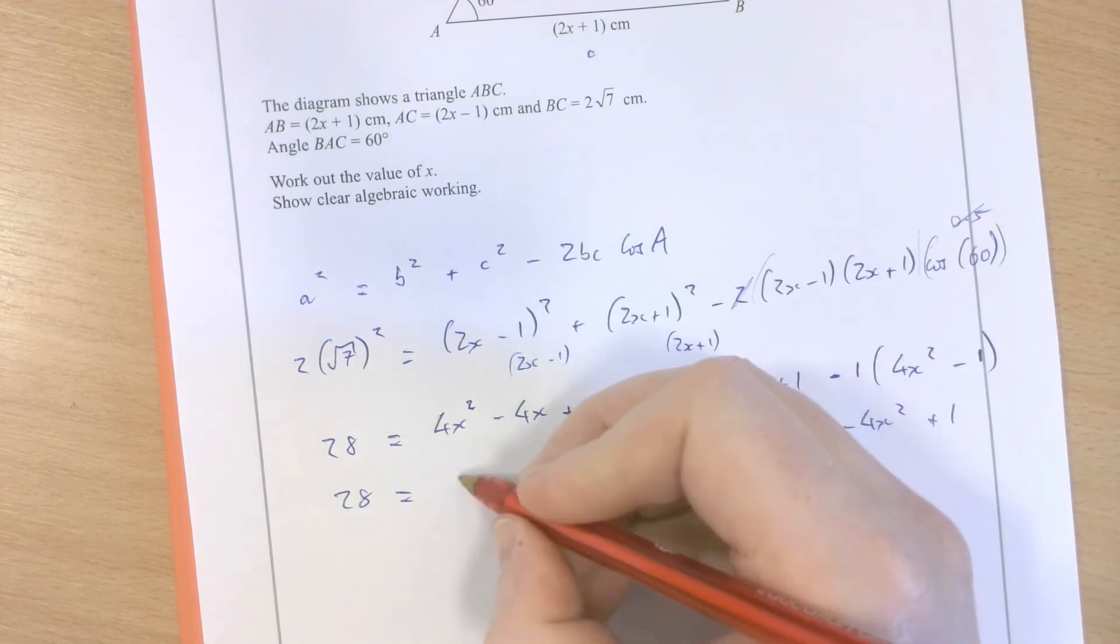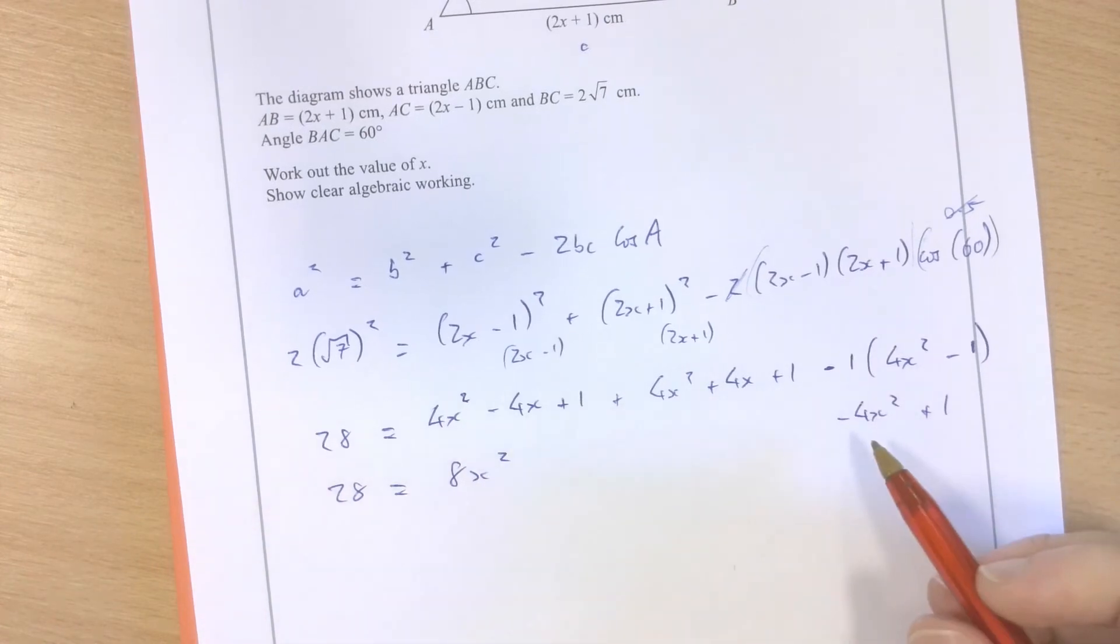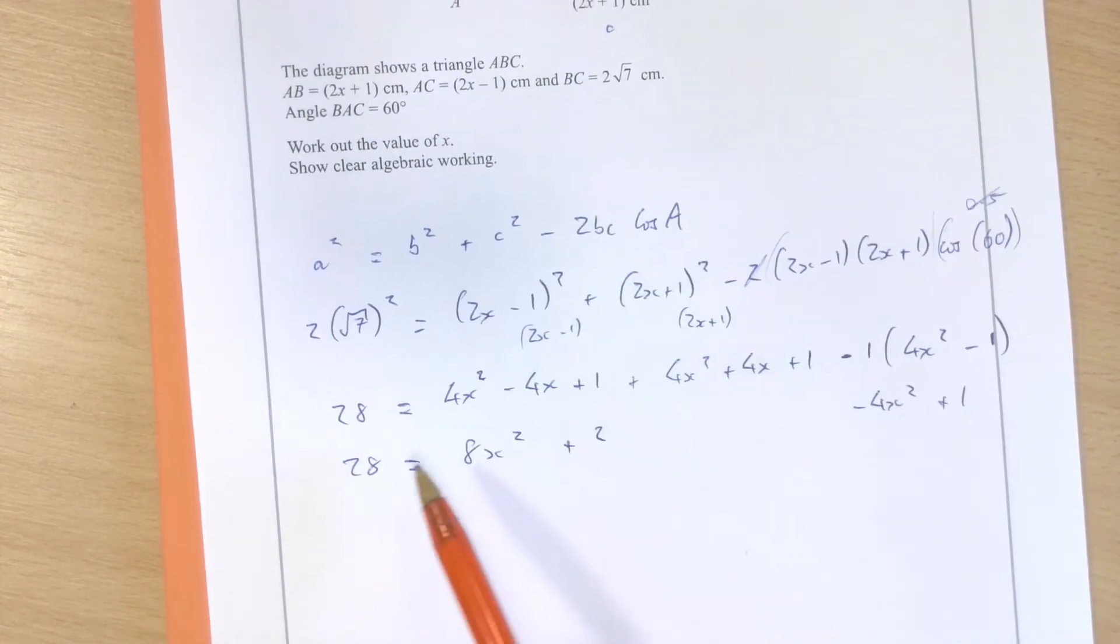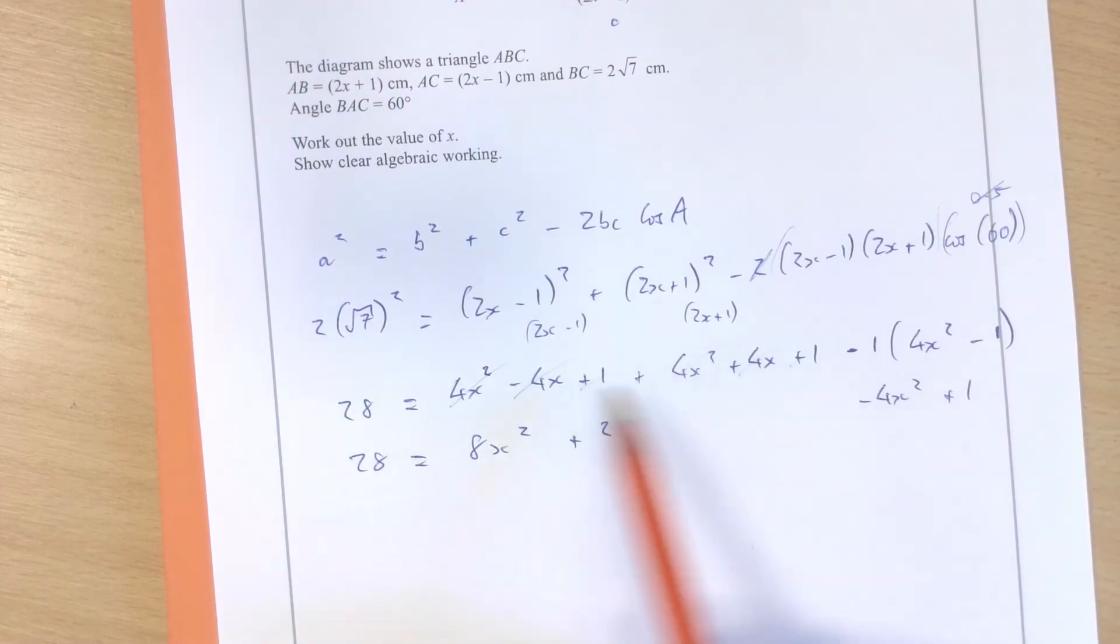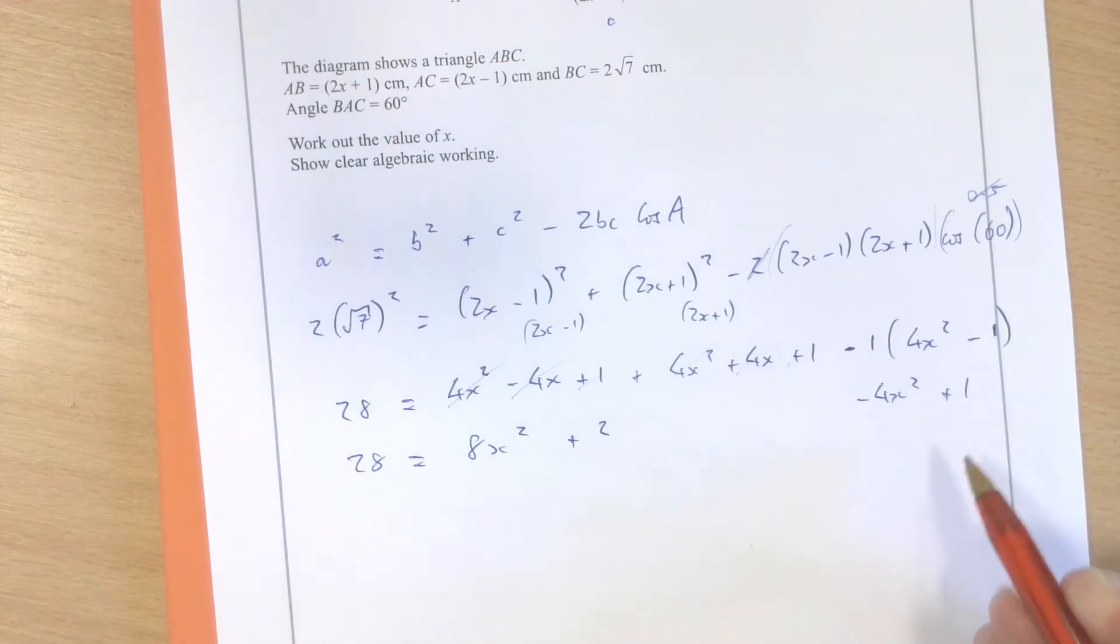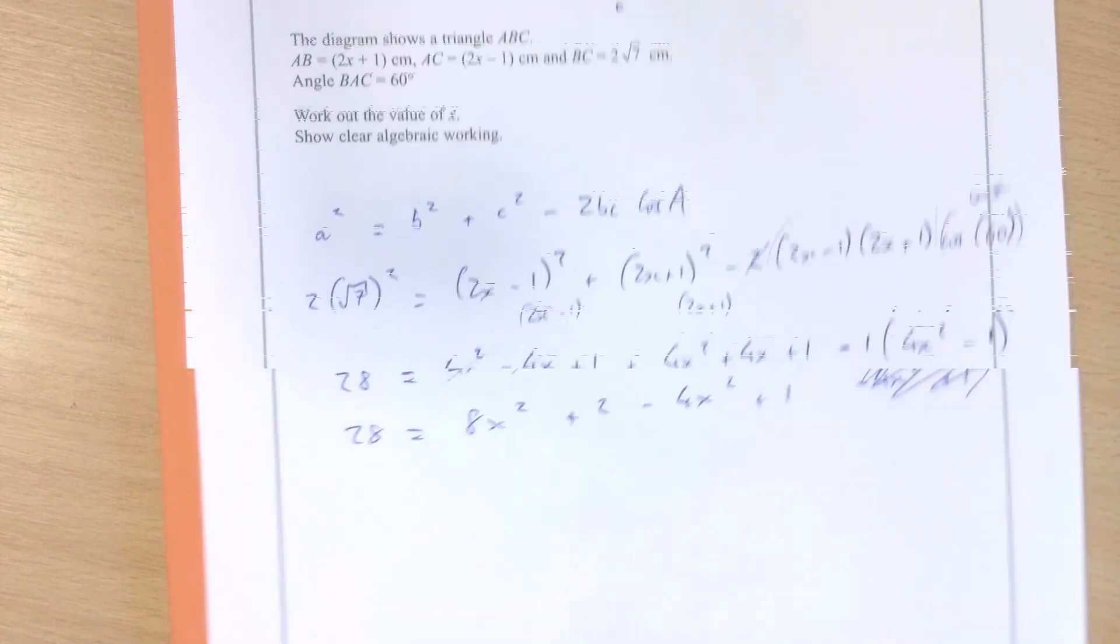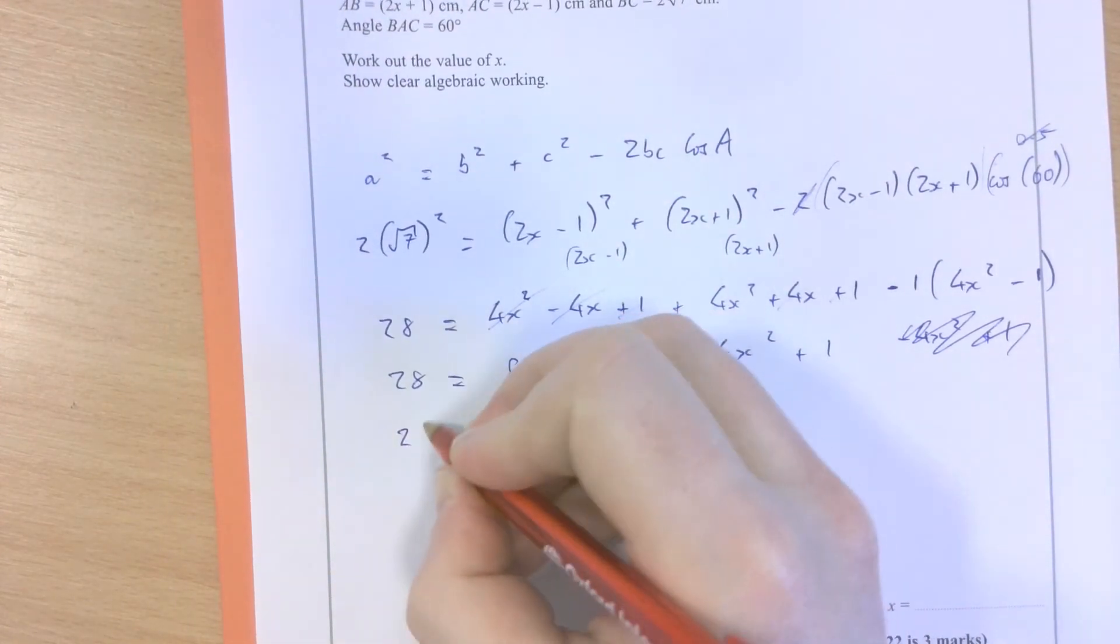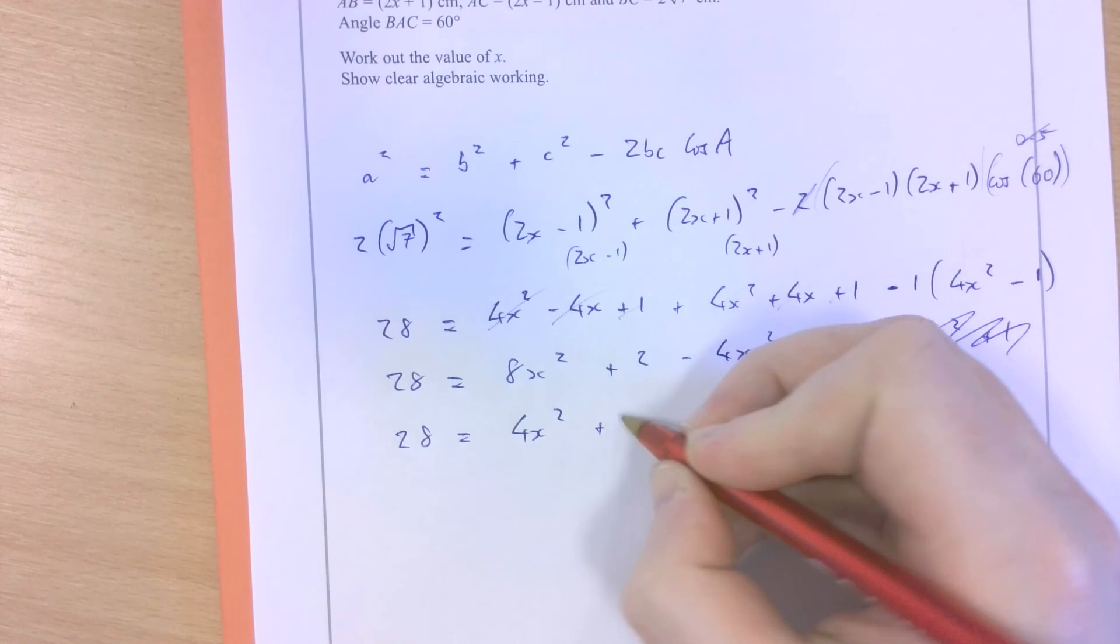4x squared plus 4x squared, 8x squared, minus 4x plus 4x, that cancels, it leaves nothing, and then 1 plus 1 is 2. So, having considered all of these parts, that's what all of this simplifies to, and then I've got a minus 4x squared plus 1 on the end of this line as well. Next line of work is just going to be to simplify this even further. 8x squared, take away 4x squared, is 4x squared plus 3 equals 28.